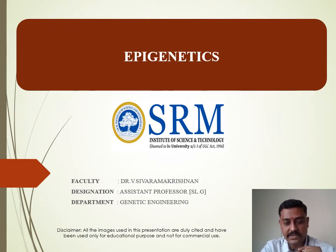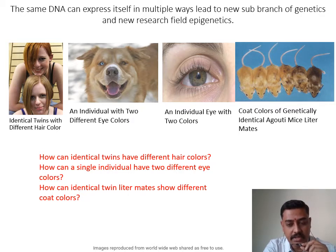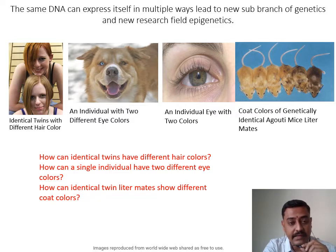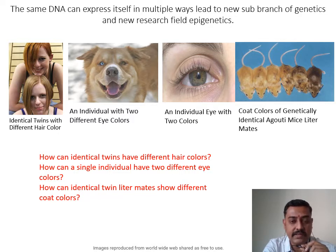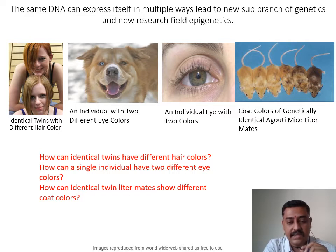Welcome to this presentation on epigenetics. As observed in these images, monozygotic twins are individuals with exactly the same identical DNA. Yet identical twins can have different hair colors, a dog can have one part of its eye white and the other a different color, and eye color changes can be seen in a single individual, as well as coat color variations in genetically identical agouti mice. What could be the reason for these differences?